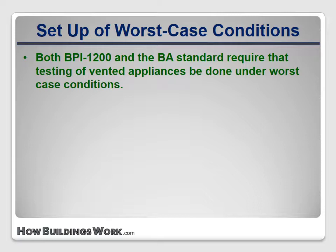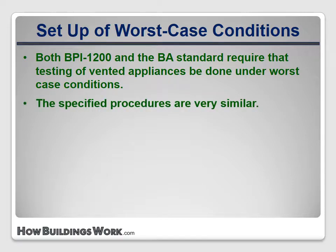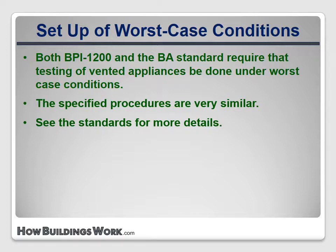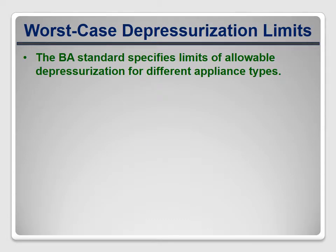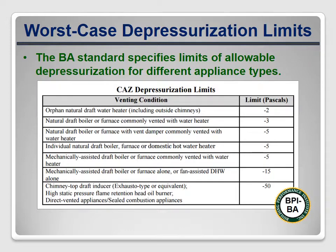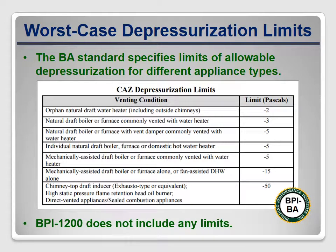Both BPI 1200 and the BA Standard require that the house be set up in a worst-case condition prior to testing vented combustion appliances. The procedures are very similar, though BPI 1200 is clearer and shortens the process a bit by simplifying decisions about whether doors should be left open or closed. The BA Standard requires that the depressurization achieved be compared to a table of limits for different appliance configurations, and if too high, the contractor must take steps to resolve it. This step is not included in BPI 1200, presumably because if the appliance functions correctly under worst-case conditions, the actual pressure is not considered important.